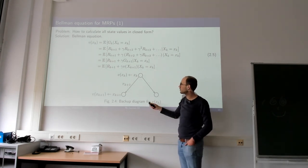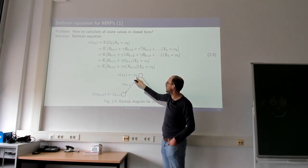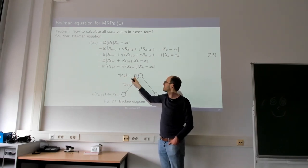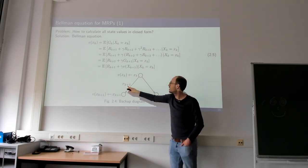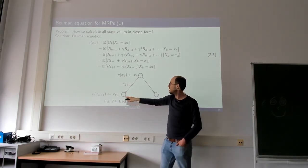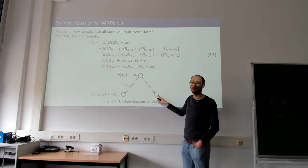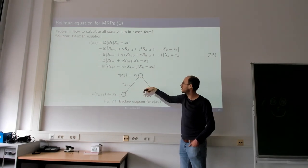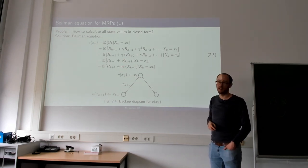The Bellman equation can be visualized as a backup diagram. The topmost node represents the starting state x_k with its value. This value equals the expectation over all possible transitions to successor states, each weighted by its transition probability, summing the instantaneous reward plus the discounted value of each successor state. In a finite Markov problem there could be many more than two possible successors.